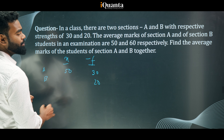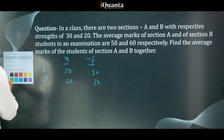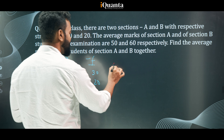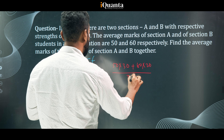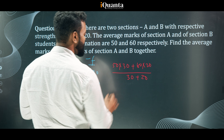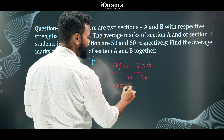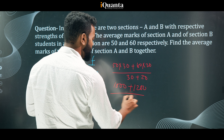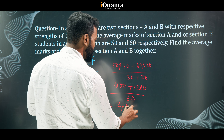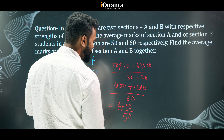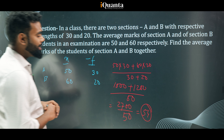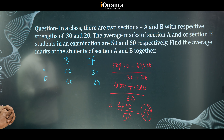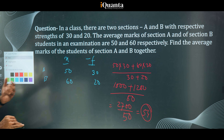To find the weighted average, I use the formula: (50×30 + 60×20) / (30+20). This gives (1500 + 1200) / 50 = 2700 / 50 = 54. So the average marks of the students is 54. This is one way of solving this question.